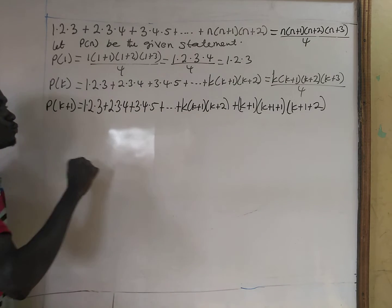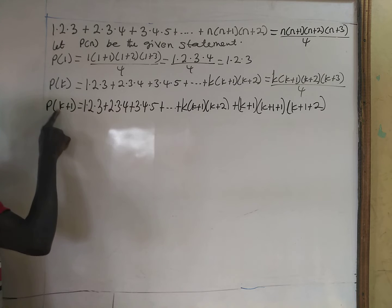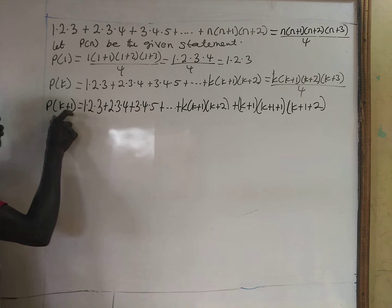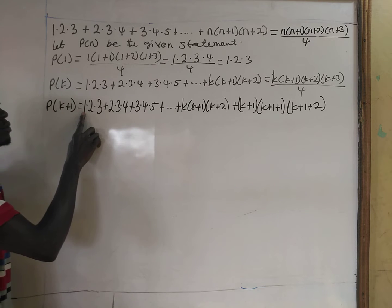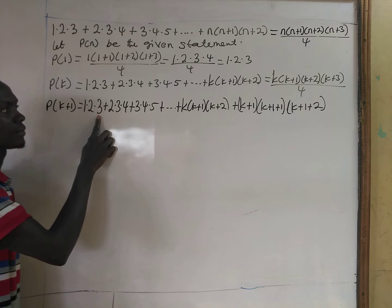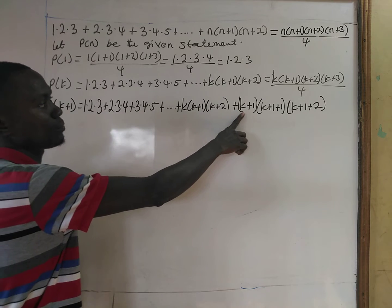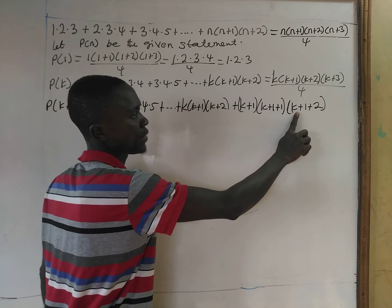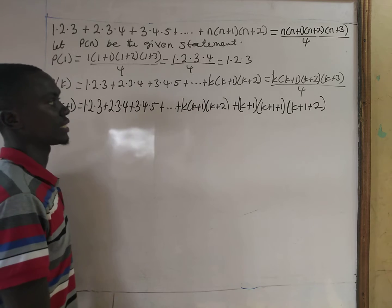Then we prove that whenever P(k) is true, P(k+1) is also true. So we need to prove P(k+1) is true. We sum from 1×2×3 up to (k+1)(k+1+1)(k+1+2).